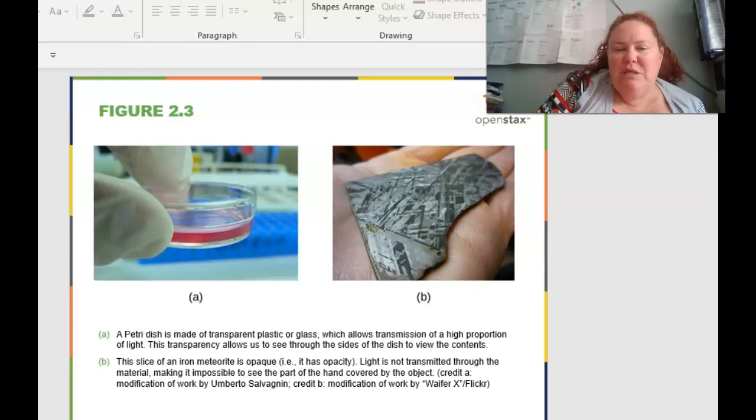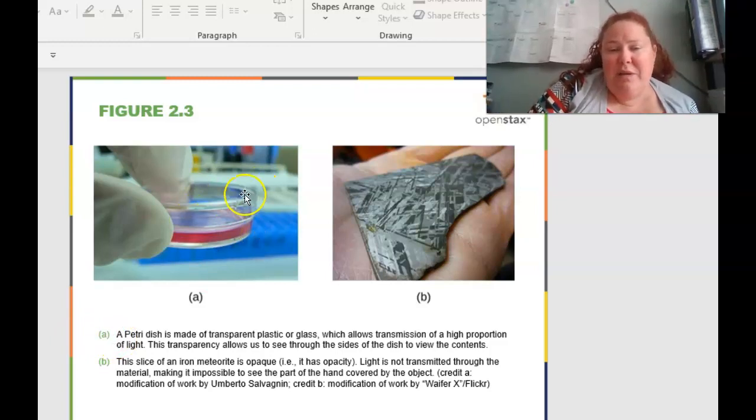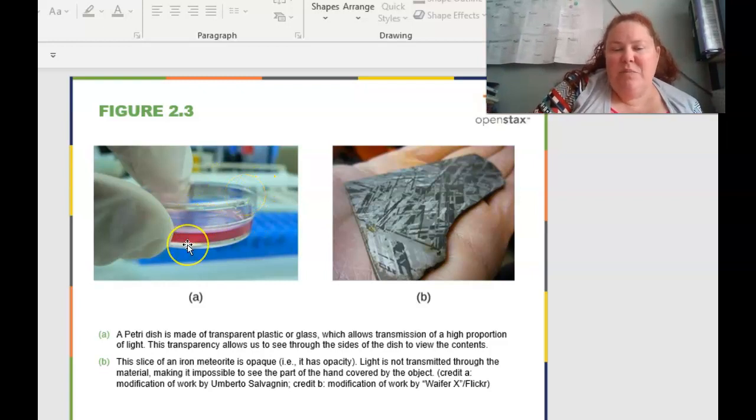We're going to use petri dishes in lab. Petri dishes are made of plastic now, they used to be made in glass, but they're disposable. All the ones that we're going to be working with in lab are plastic. This allows for a transmission of a high proportion of light, so we can see through them. Then this transparency we can use because if you use a dissecting scope, you can look through and actually look at the growing microbes without even opening the container itself.